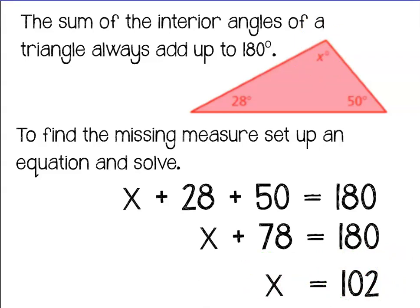x is equal to 102 degrees. And I know that because my theorem says if I add up all three numbers, they have to equal 180. Let's try another one.